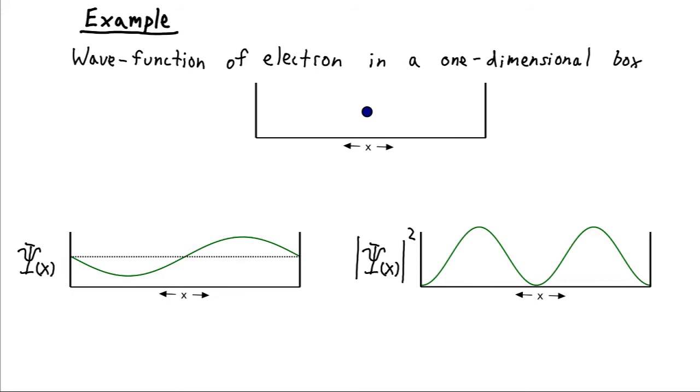And if we square that, we'll get the probability of locating the electron at that particular position. And so if we square it, we're going to get all positive values. And where we have large negative numbers, we'll get large positive values. Where we have large positive values, we'll also get large positive values. And so we get a function that looks like this.